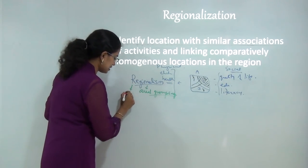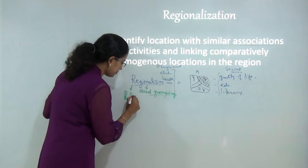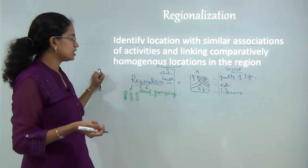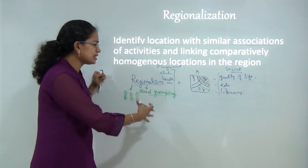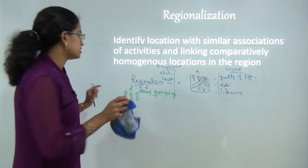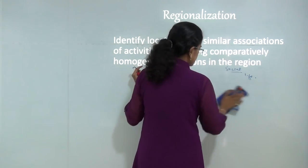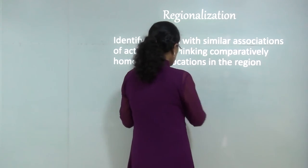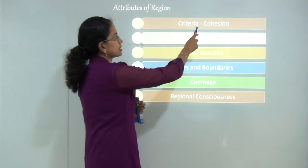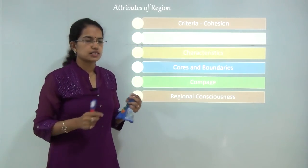Be it regionalism or regionalization, the primary requisite is I must have some attributes based on which I can divide a region. The first attribute is criteria, which mainly governs the aspect of cohesion or homogeneous nature.